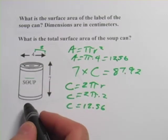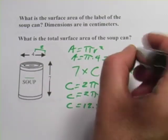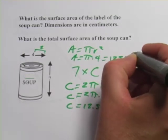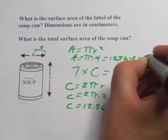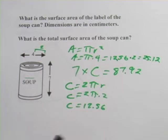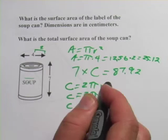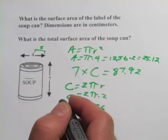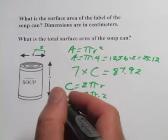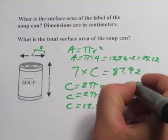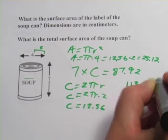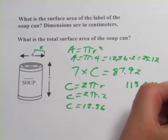But we have two of them, so we're going to multiply that by 2, which would be 25.12. That we have to add to our label part of the can. So 87.92 plus 25.12. And we get a grand total of 113.04 centimeters squared.